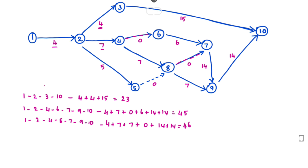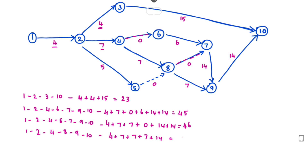Next path is 1-2-4-8-9-10. The duration will be 4 plus 7 plus 7 plus 7 plus 14, so the total duration will be 29.